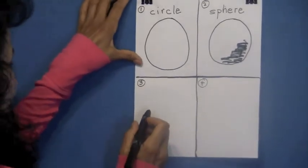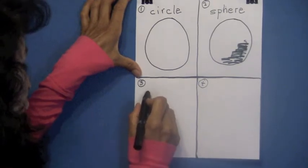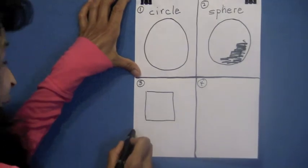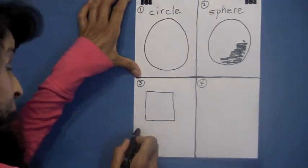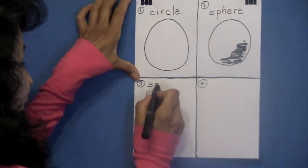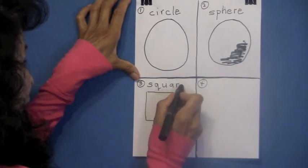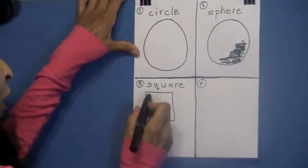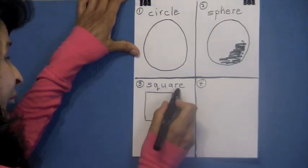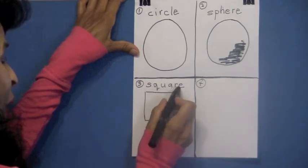Let's go on to box number three. Here in box number three, we're going to draw a square. Remember, a square has four equal sides. So try to get those sides as equal as possible. Now let's spell square. S-Q-U-A-R-E. And how do we pronounce this again? Square.